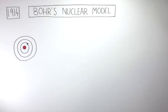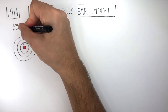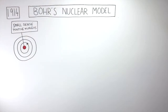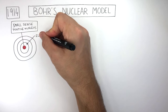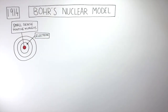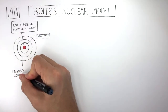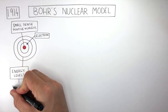This diagram represents Bohr's nuclear model, which is another way of saying atomic structure. The red circle represents the small dense positive nucleus which is found at the center of the atom. This cross represents the electron which is found in the energy levels, also known as shells.